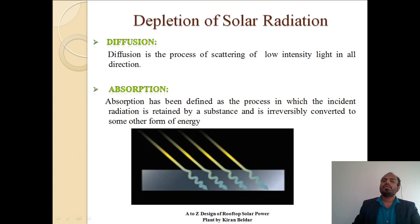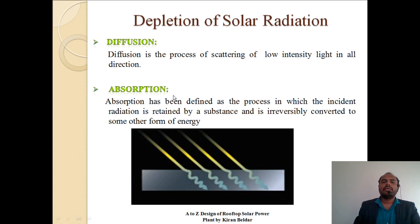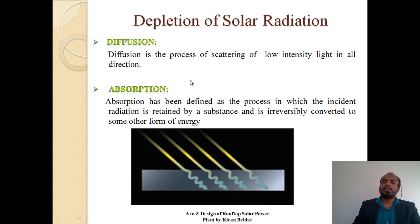Diffusion is the process of scattering of low intensity light in all directions. When we consider diffuse solar irradiation, the solar energy is absorbed by the atmosphere and further gets diffused, or evaluated over the solar panel. This is called diffusion of light. The direct beam of solar radiation is not getting incident over a solar panel; this diffuse light occurs due to air molecules and dust particles present in the atmosphere.